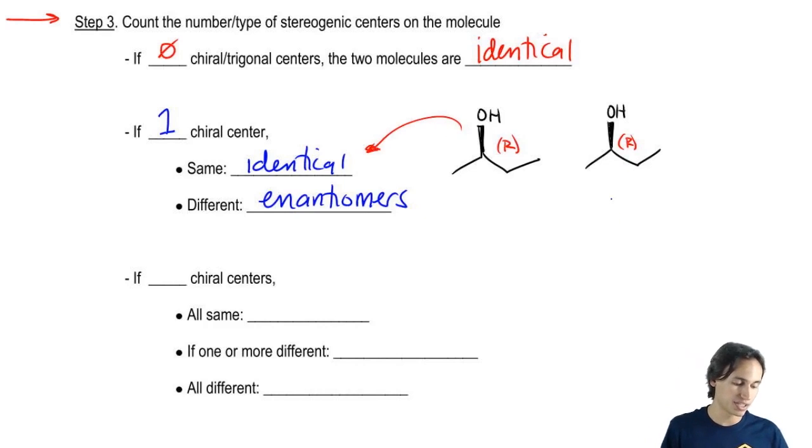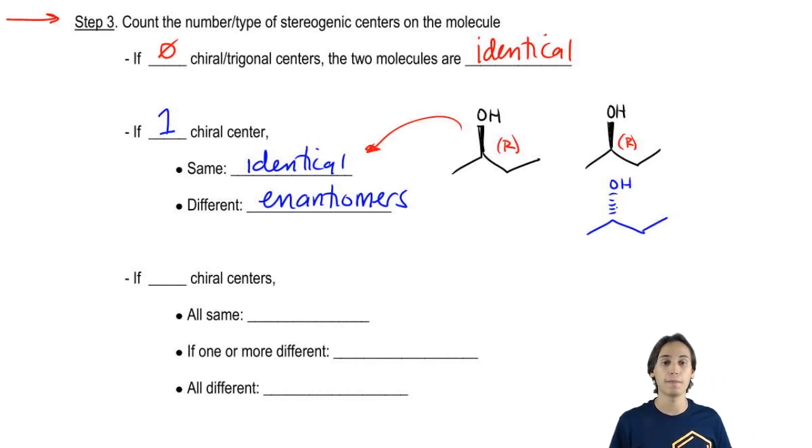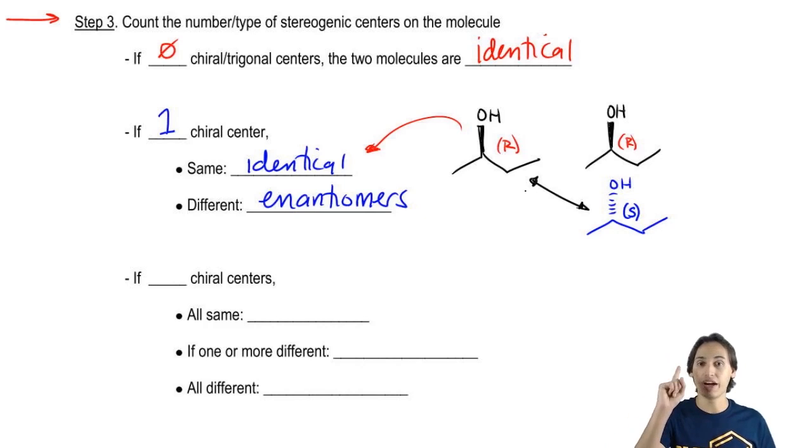Now what if I'm comparing it to instead of R, what if I were comparing it to the same molecule but now my OH is on a dash? Now instead of being R, this one's going to be S. What do you think is the relationship between these two guys? Well, we have one chiral center and they're different. So then these would be enantiomers or mirror images.